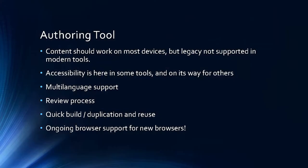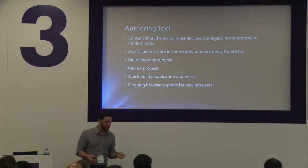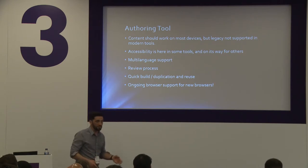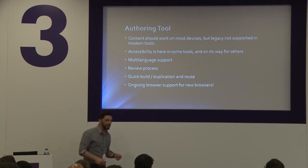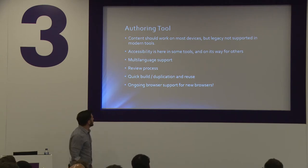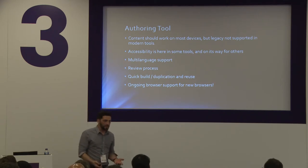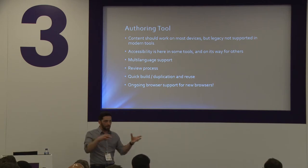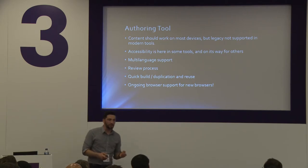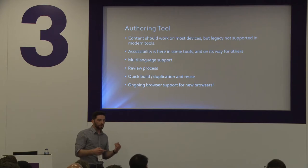With an authoring tool, it should work on most devices, but legacy browsers are not supported in modern tools — you've got to use the right tool. If you're a bank using IE8 or even IE6, use something like Articulate. If you want bleeding-edge stuff, you could use something like GoMo or Evolve Authoring. Accessibility is here in some tools and on its way for others — it's a growing requirement in every RFP. There's often multi-language support as well, and you can maintain multiple languages of the same course quite effectively. There's a review process built into the tool, a bit like Google Docs. And there's quick build — duplicate a course, change the content, with ongoing browser support.